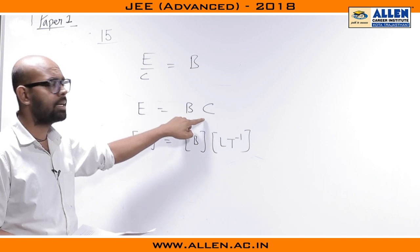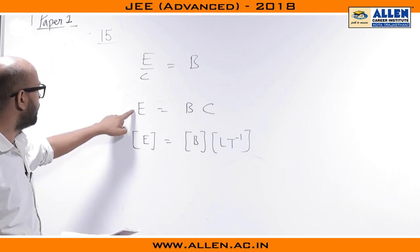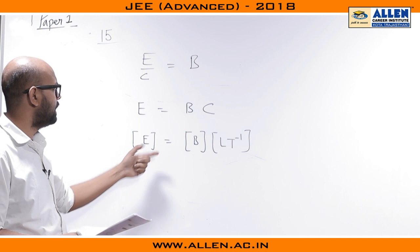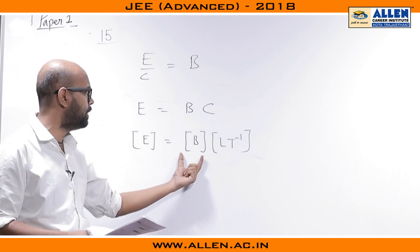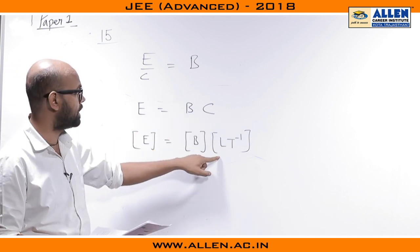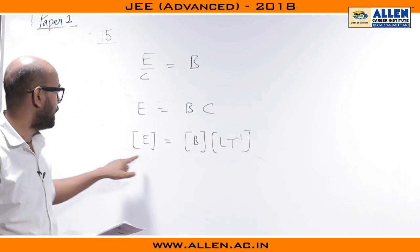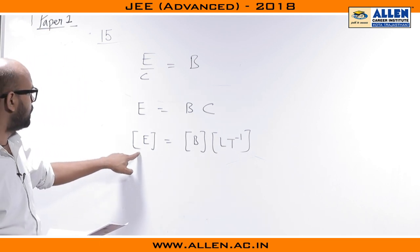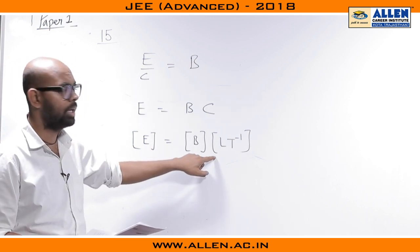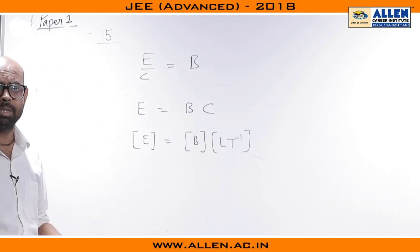If these 2 quantities are same then the dimensional formula has to be same. The dimensional formula of E is represented as [E] and dimensional formula of B is represented as [B], and c is the speed of light, so we represent it by LT⁻¹. So we have a relation: dimension of E equals dimension of B into LT⁻¹ which is given in option C.